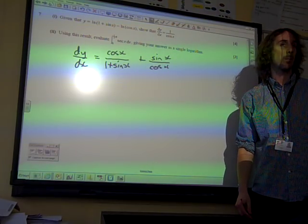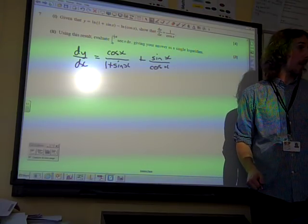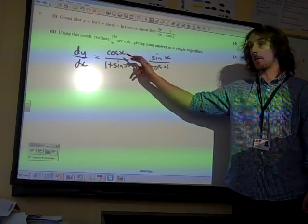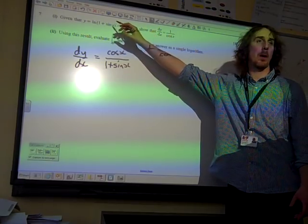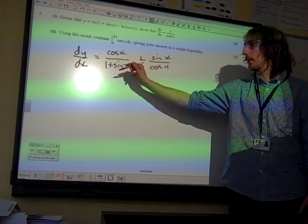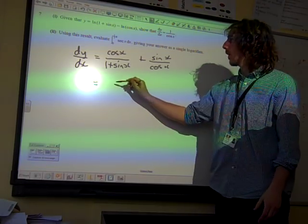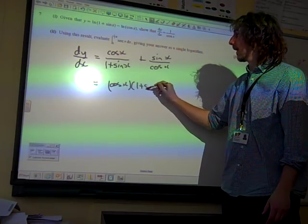Now, somehow we need to combine this and turn it into 1 over cos x. Because there were quite a few people, when I was marking this, missed out these top lines, kind of 1 there and 1 there, because they forgot to multiply by the derivative of the inside bit.